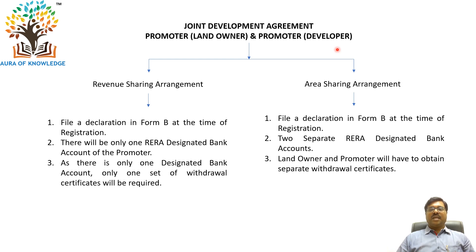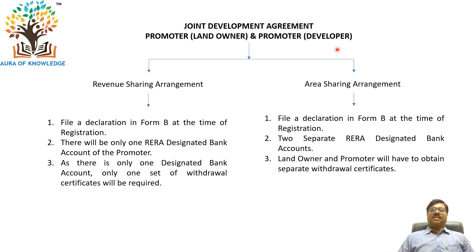Whenever monies have to be withdrawn, the respective parties have to submit three certificates — that is the architect certificate, engineer certificate, and chartered accountant certificate — and they can withdraw the monies. I hope it is clear. If you have any questions, please post them in the comments box and I will reply. Thank you.